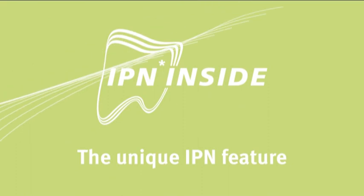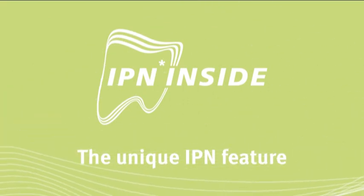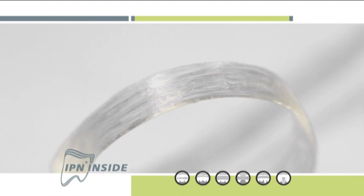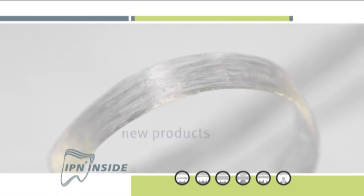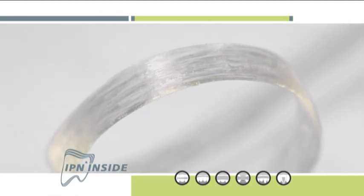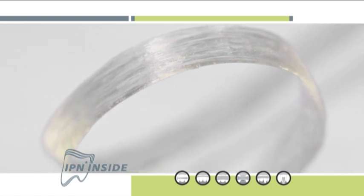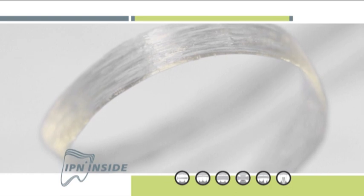IPN, Interpenetrating Polymer Network. Fiber reinforcements in general are considered relatively new products. Research history and continuous development are significant differentiators when choosing between fiber reinforcement systems.